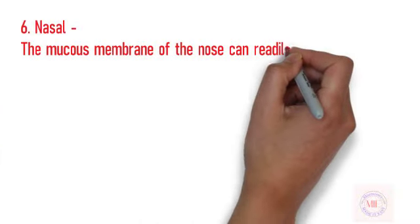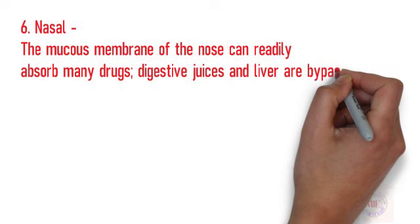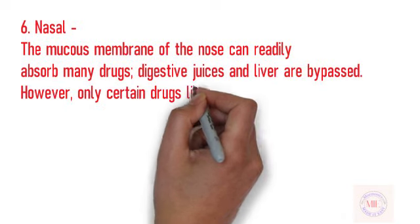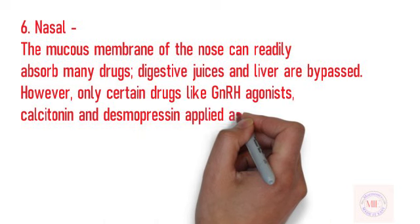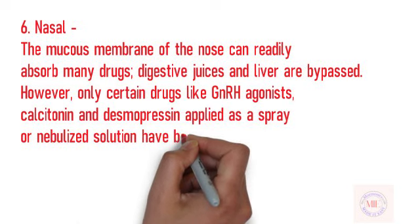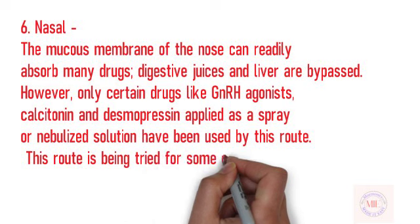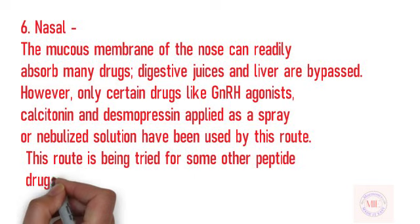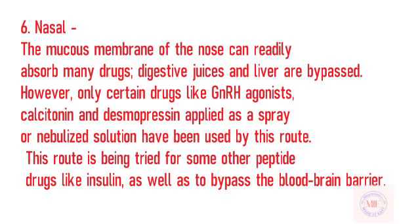Nasal: The mucous membrane of the nose can readily absorb many drugs. Digestive juices and liver are bypassed. However, only certain drugs like GnRH agonists, calcitonin and desmopressin applied as a spray or nebulized solution have been used by this route. This route is being tried for some other peptide drugs like insulin, as well as to bypass the blood-brain barrier.